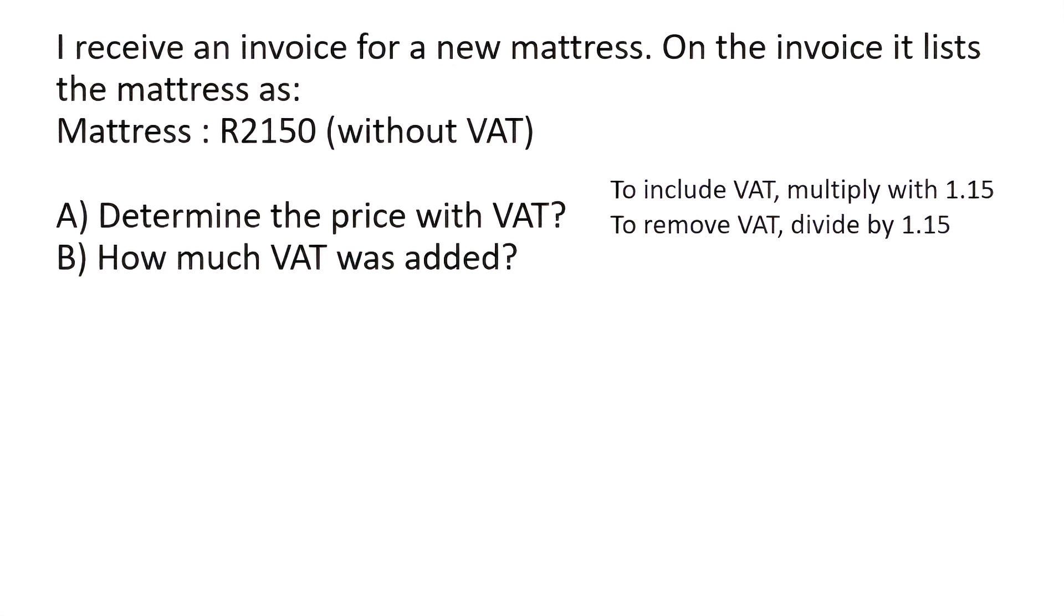Here's our last question for this lesson. I receive an invoice for a new mattress. On the invoice, it lists the mattress as 2150 Rand without VAT. Determine the price with VAT. So to include VAT, you're just going to multiply with 1.15. So we're just going to say 2150 multiplied by 1.15, and so that's going to be 2472.50.